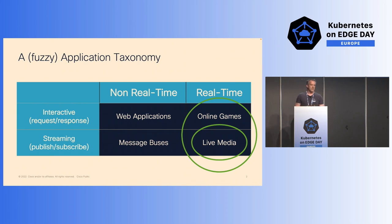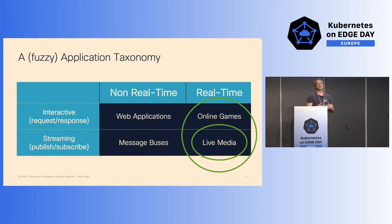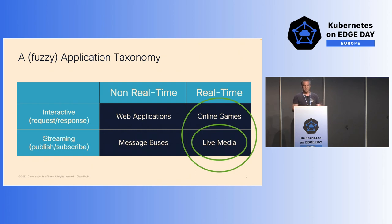The issue becomes: how do we make those streaming apps sufficiently cloud-native so we can use all our cloud-native tooling, drive the cost down, and hopefully deliver real-time over the internet for mass markets?